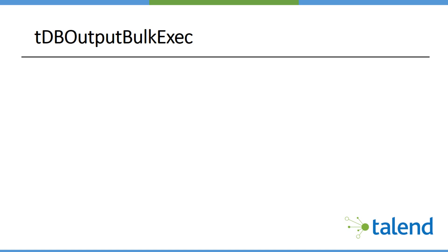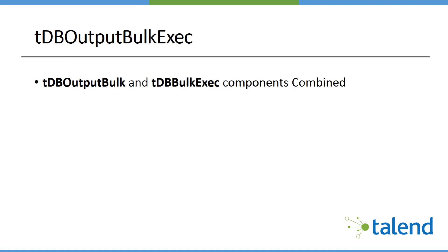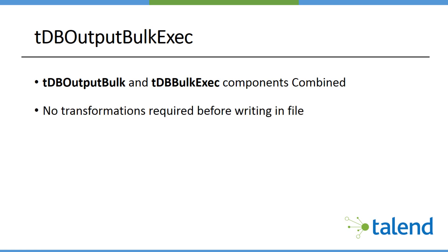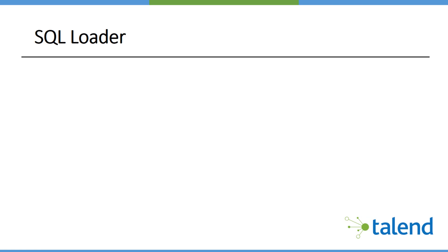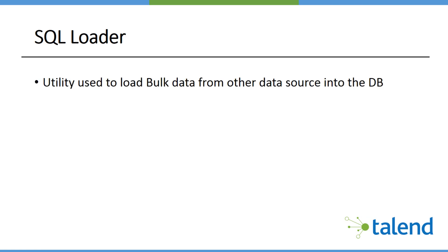The next component is the T database output bulk execute component. This is a combination of the previous two components, and it is recommended if you do not want to perform any transformations before writing data in the file.